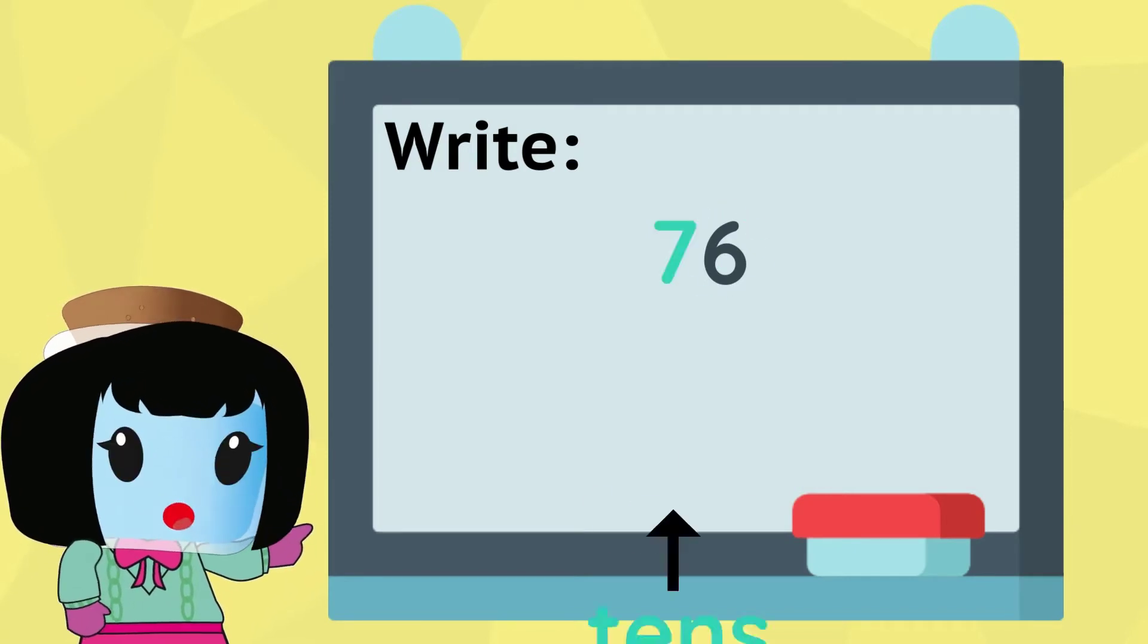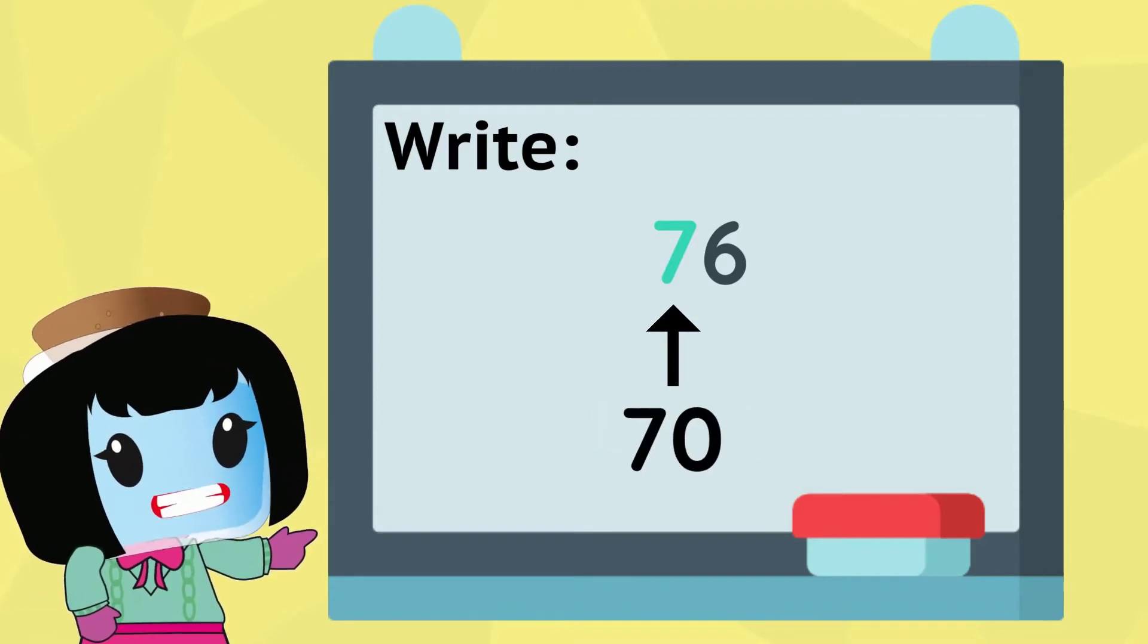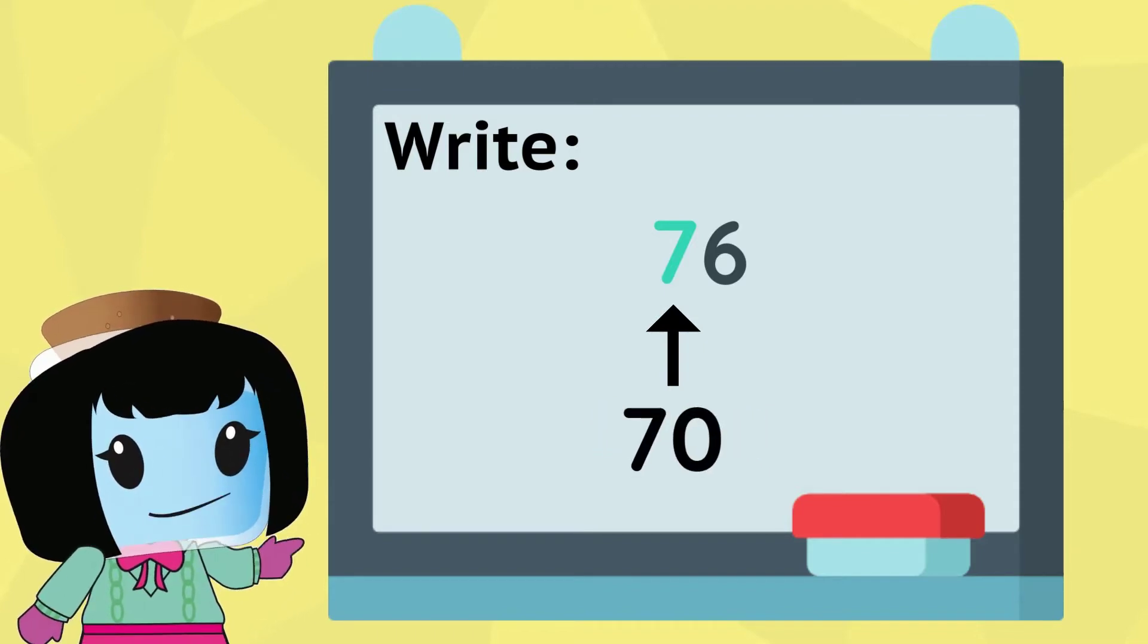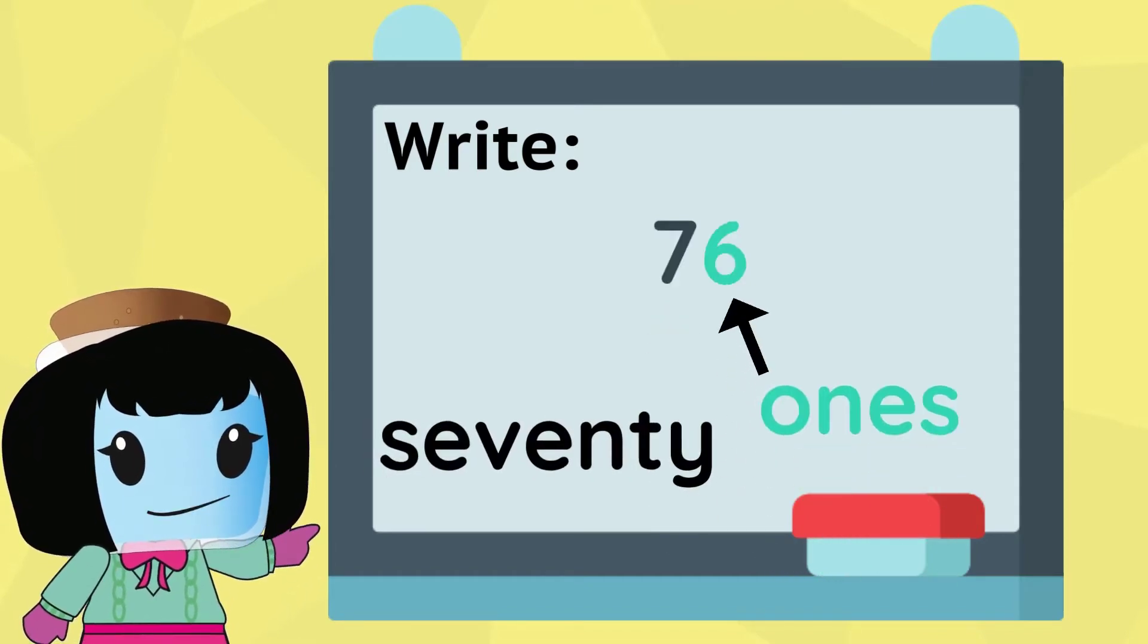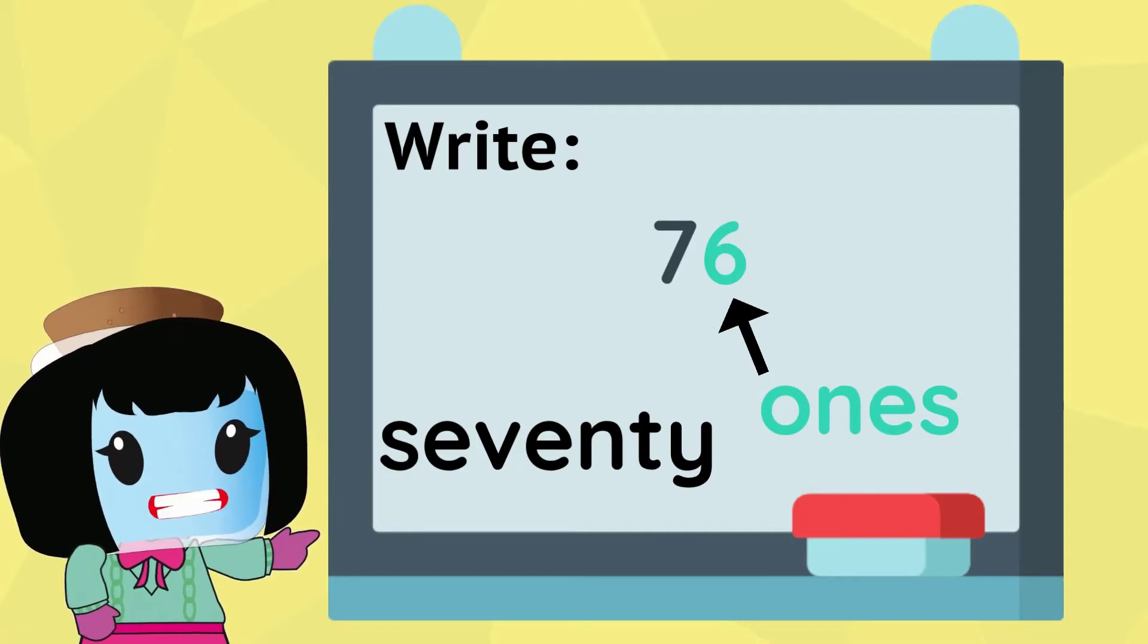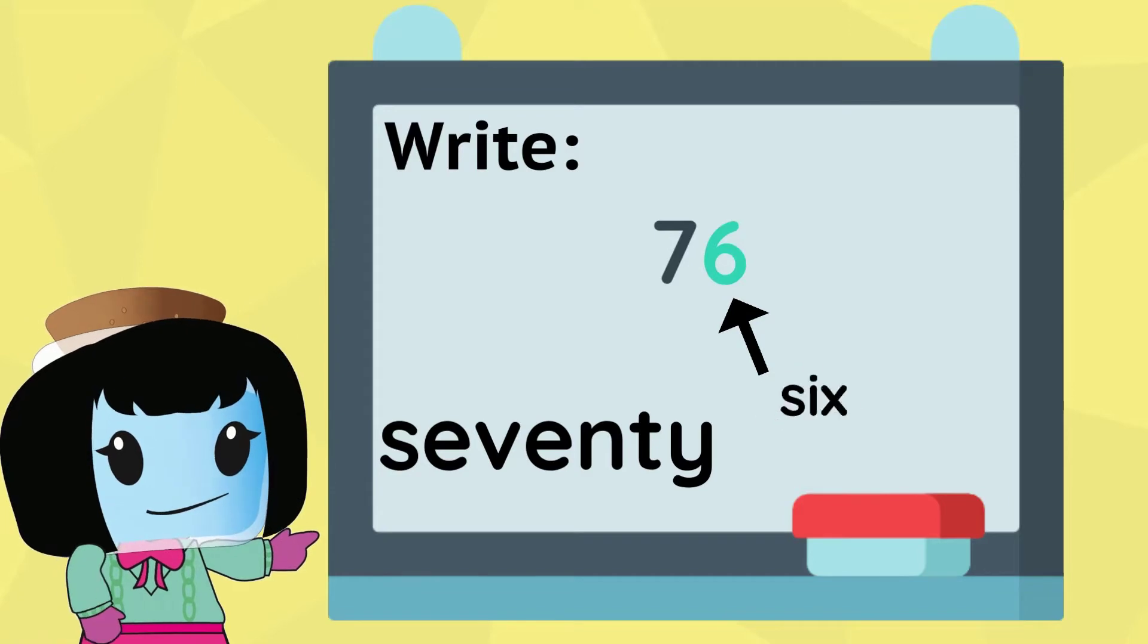Seven is in the tens place, so this is actually 70. Write this as 70. Six is in the ones place, so this just equals six. Write this as six.